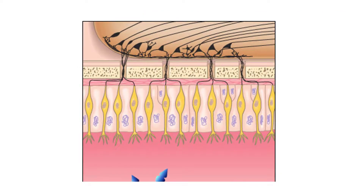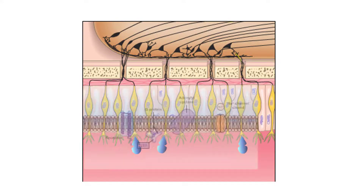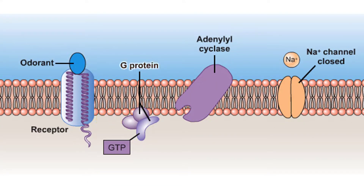Let's now look at the chemical basis of smell. How does smell occur at the molecular level? Let's go back to the ciliated part of the olfactory receptor cell. Recall that an odorant binds to the receptors found here that end in the mucus layer. This first messenger — the odorant — triggers a cell transduction pathway, beginning with a G-protein being activated.